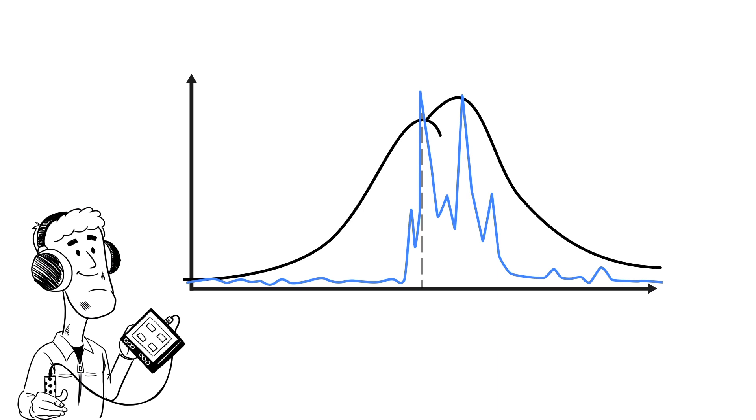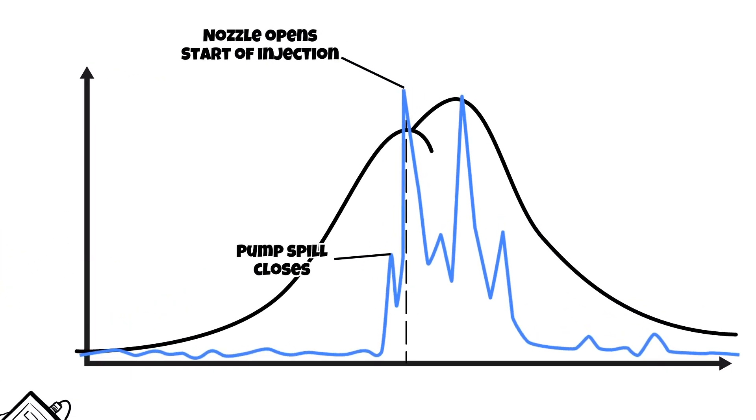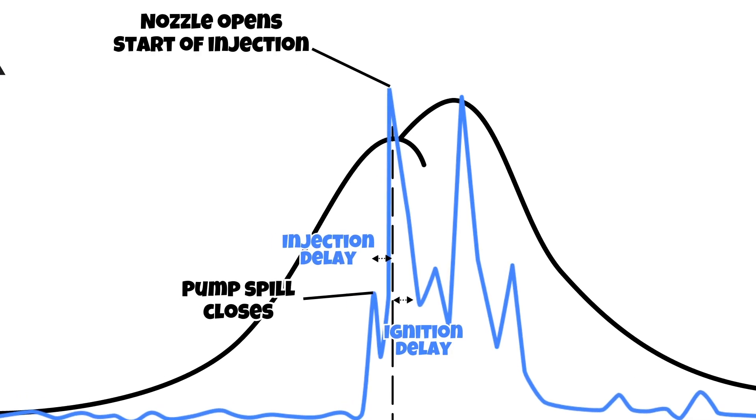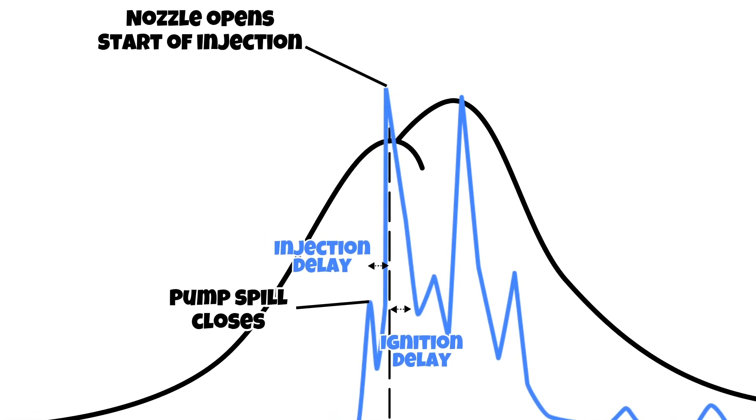It listens into your engine and discovers further important information, like the angle at which the pump spill closes, the nozzle opens and starts to inject fuel into the combustion chamber, and together with the point of ignition from the pressure sensor, this gives you the delay for ignition as well as for injection.